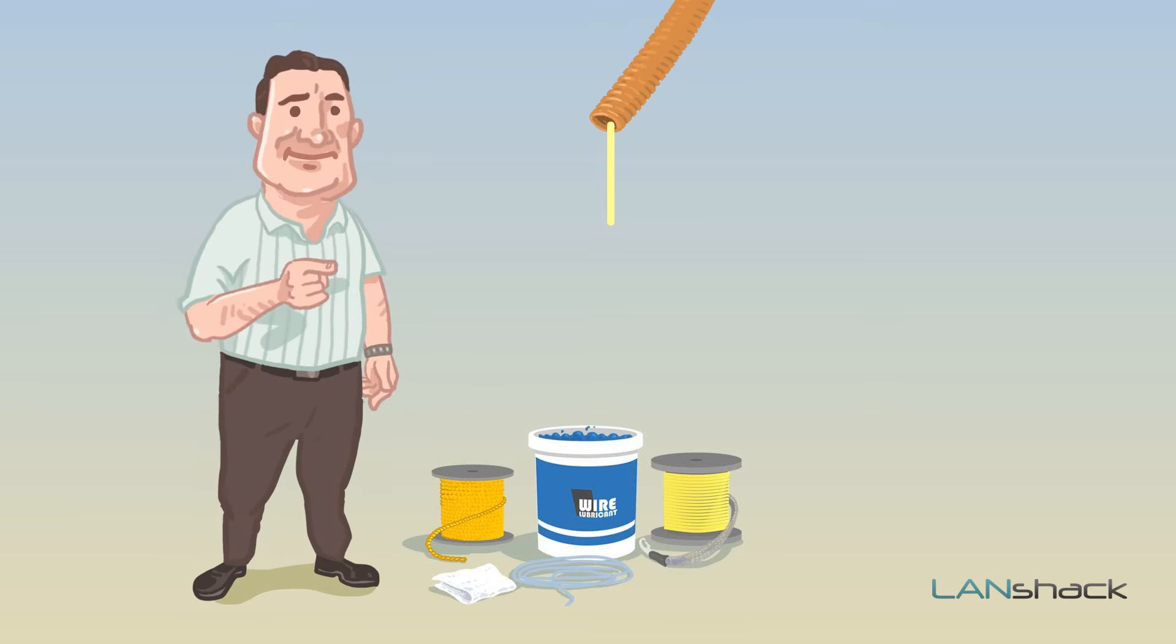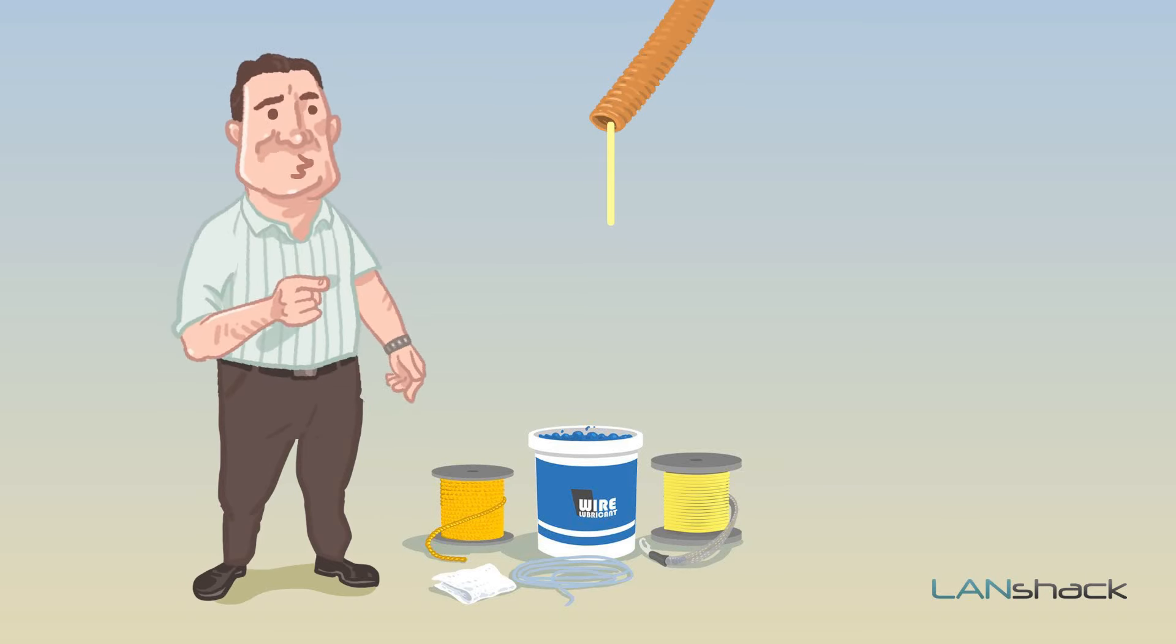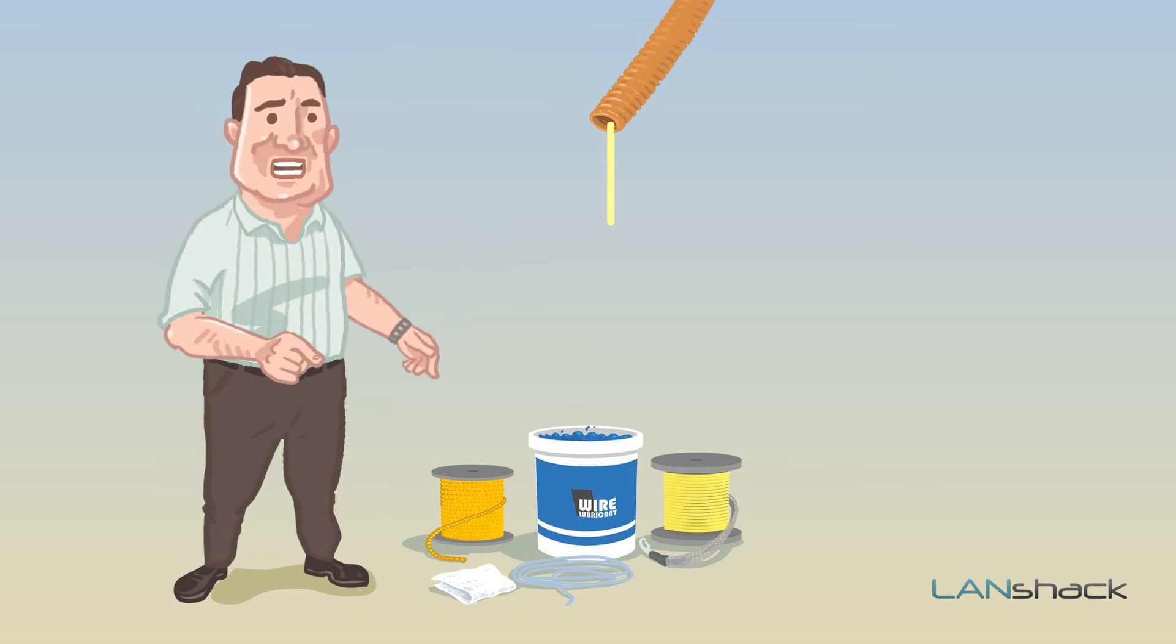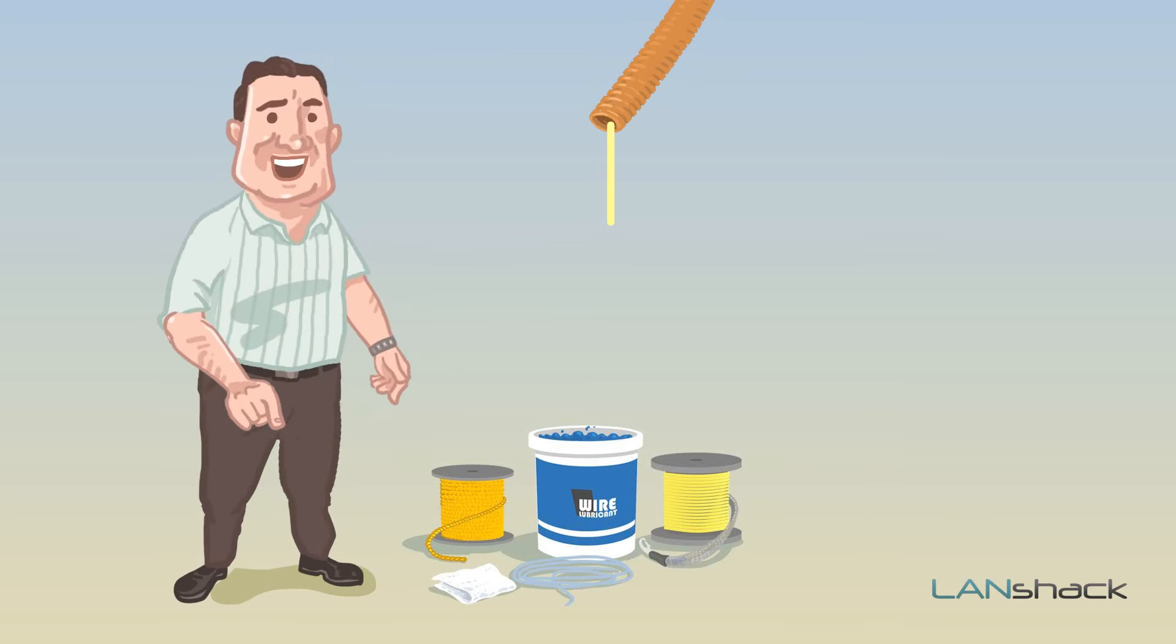That's how you do it. You can lubricate your conduit in one direction, two directions, and even three directions as we've demonstrated here. This will save you a lot of time and will make a difficult pull possible and painless.